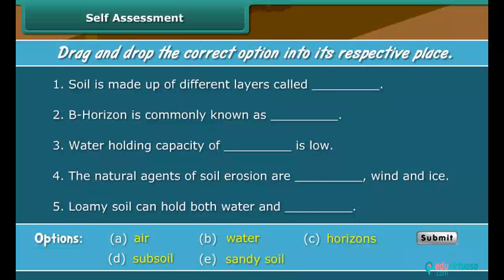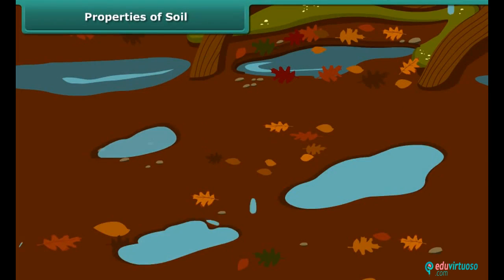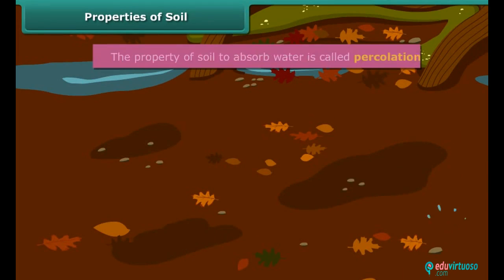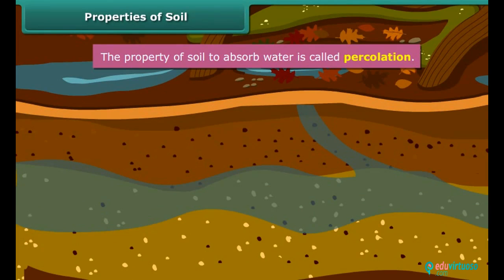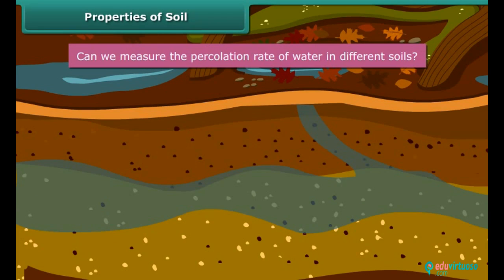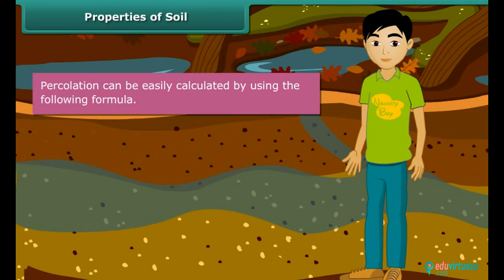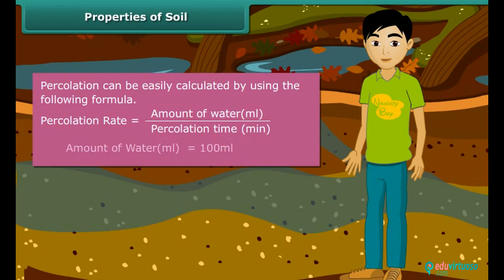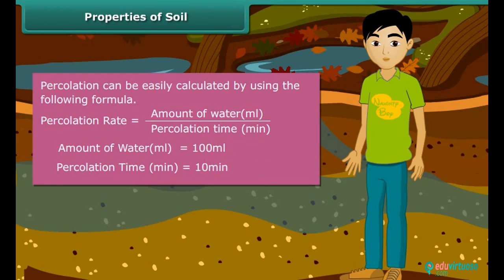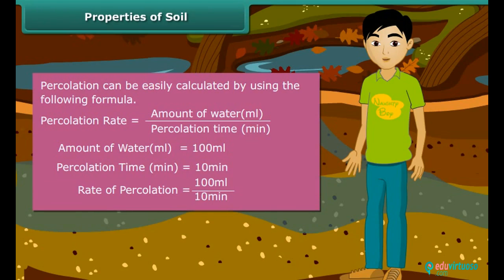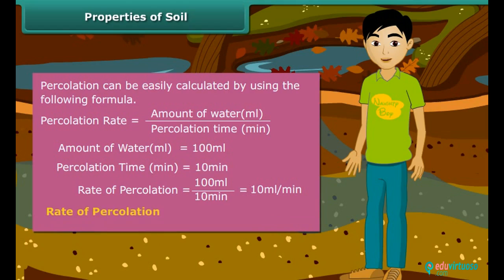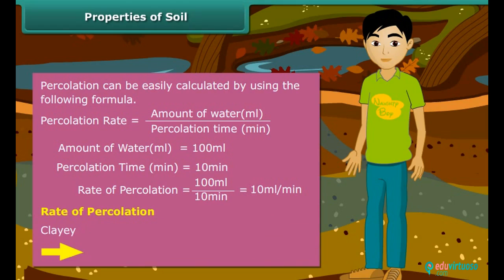Self Assessment: Let us check what you have learned so far. Properties of Soil: Soil has the property to absorb water, and this is called percolation of water by soil. The rate of percolation can be easily calculated using a formula. For example, if it took 10 minutes for 100 ml to percolate, then the rate of percolation will be 10 ml per minute. The rate of percolation is different for different soils — sandy soil can absorb more water than clay and loamy soil.